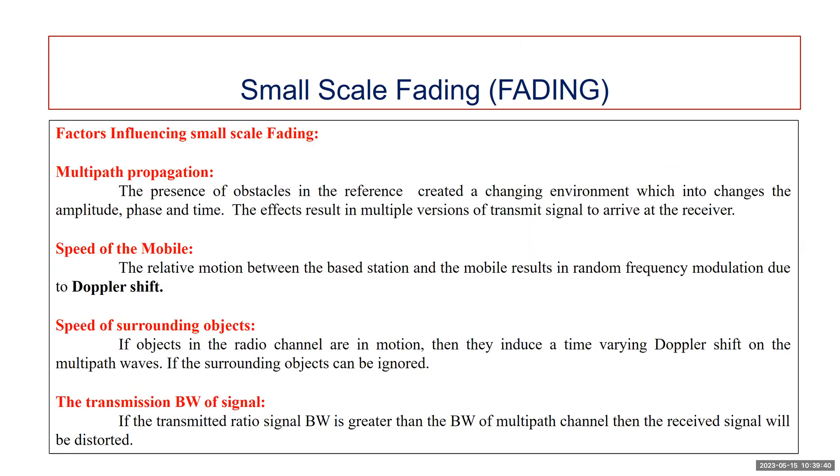What are the major factors which influence small scale fading? First is multipath propagation. The presence of reflecting objects and scatterers in the channel creates a constantly changing environment which changes the amplitude, phase, and time. The effect results in multiple versions of the transmitted signal arriving at the receiver. Multipath propagation often lengthens the time required for the signal to reach the receiver.